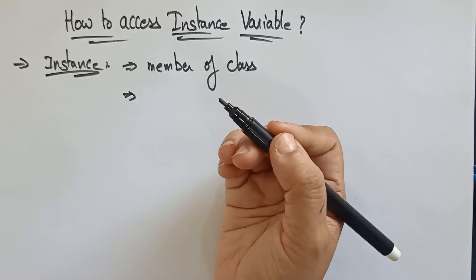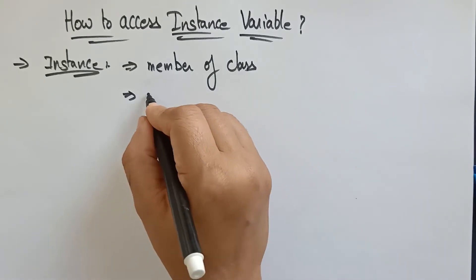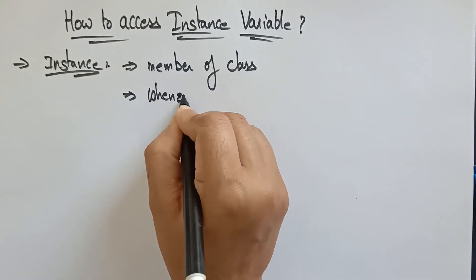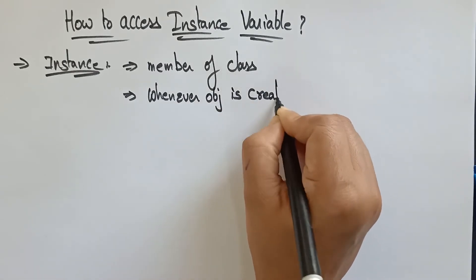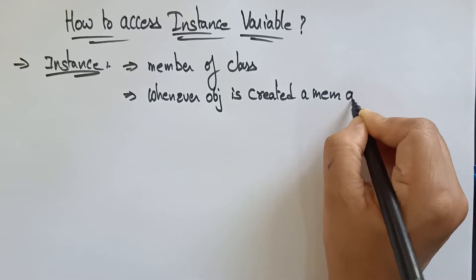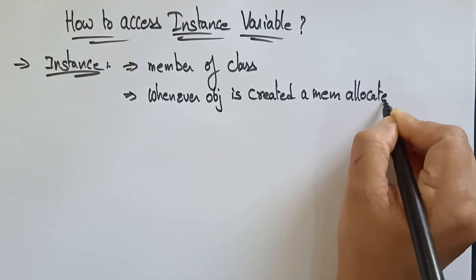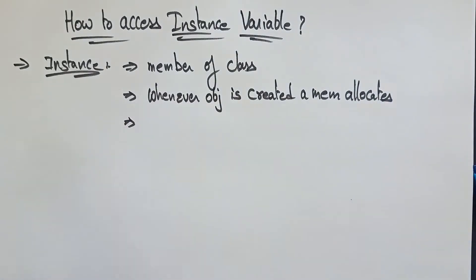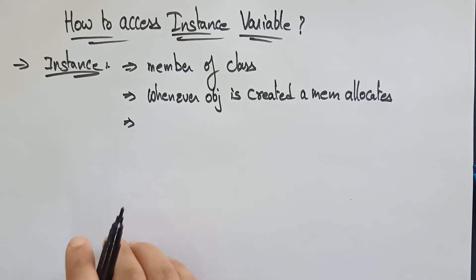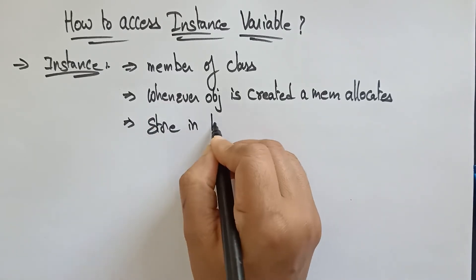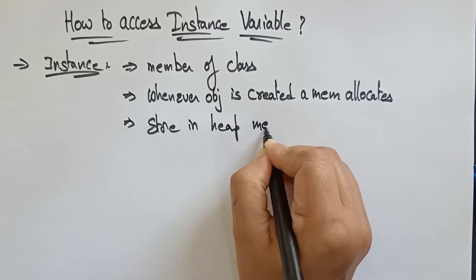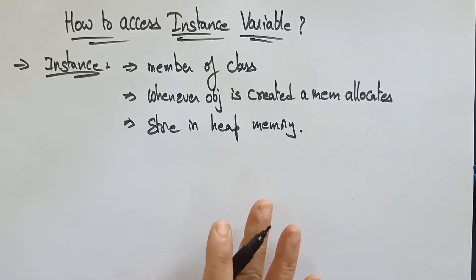Memory is allocated to an instance variable whenever an object is created. Until the object is created, no memory will be allocated. Whenever the object is created, then only memory will be allocated. This instance variable will be stored in heap memory.